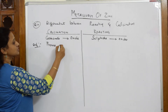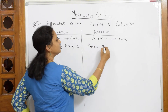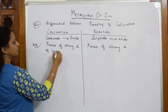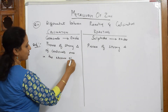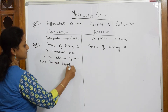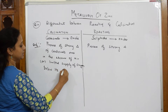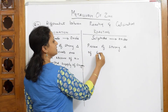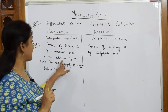Calcination is a process of strong heating of carbonate ores in the absence of air, or limited supply of oxygen, below its melting point or fusion temperature — not above that. For roasting, it is also a process of strong heating of sulfide ores, but in the presence of air. So calcination is in the absence, roasting is in the presence — that is the key difference.